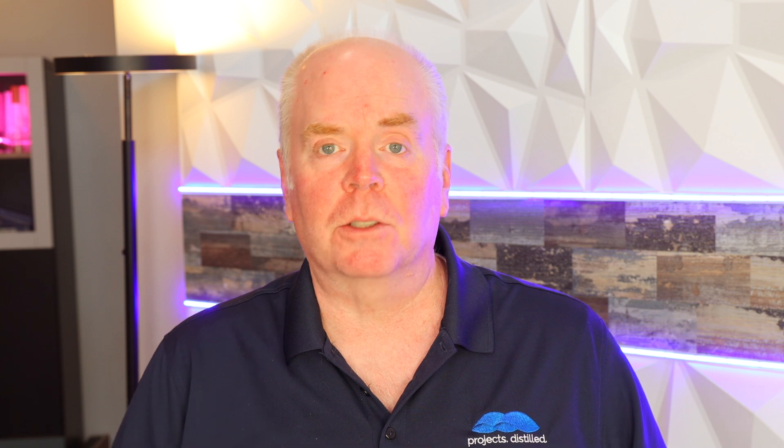So this is an okay prompt. I'm going to show you a more detailed, more specific prompt — what I would consider a better prompt — and let's take a look at the difference in the results. Here's the more detailed prompt: it's the same scenario, but here I'm giving it a start date, more details around who I am and what I'm looking for. I also specify that I'm looking for a list and I want it in table format. Let's see those results.